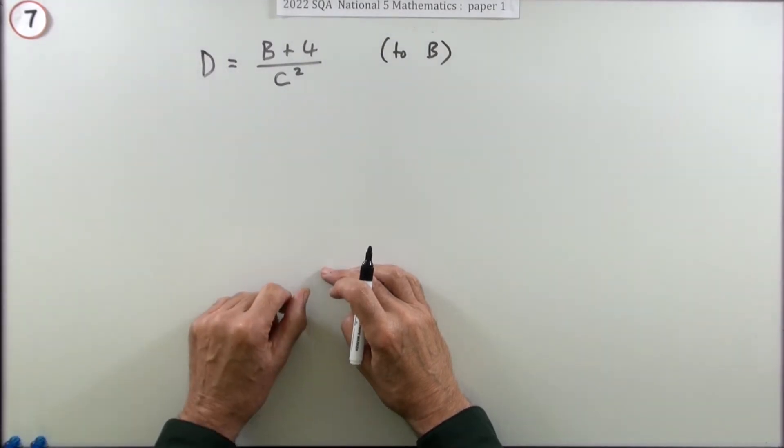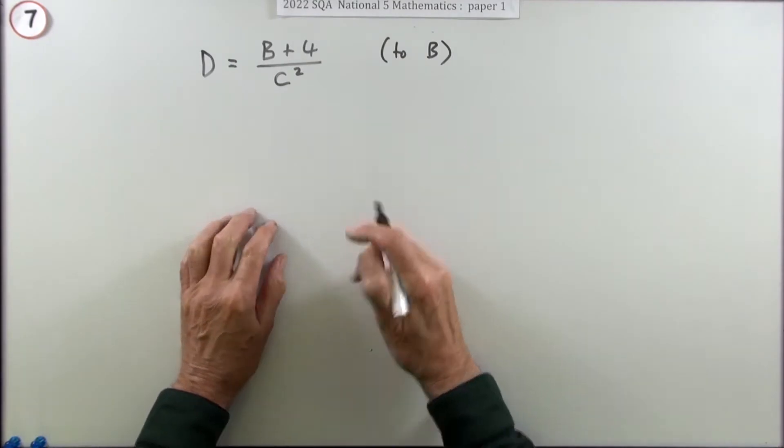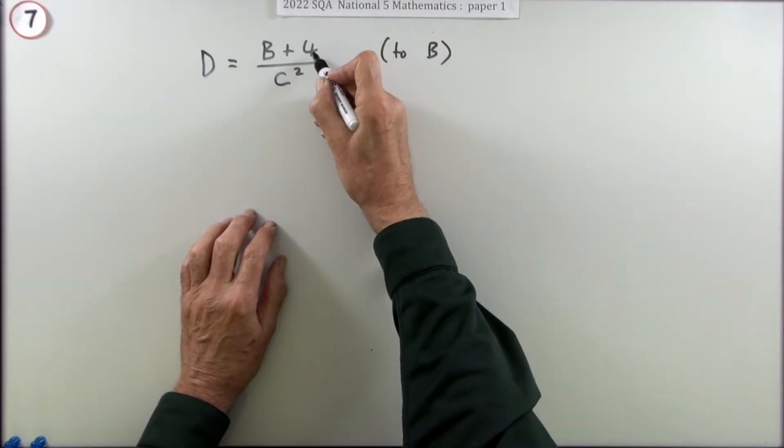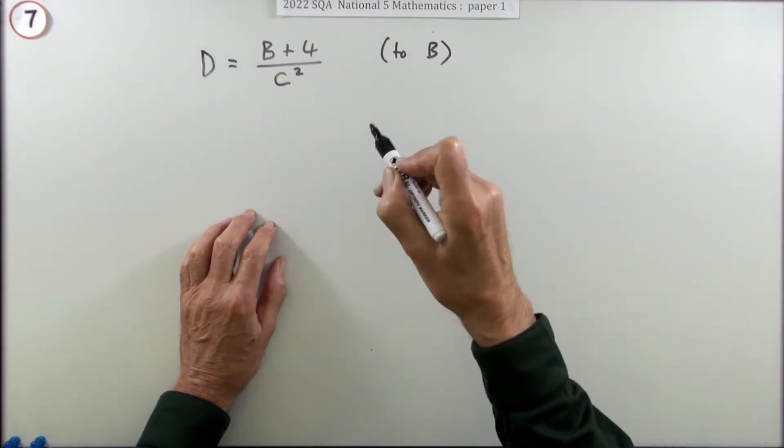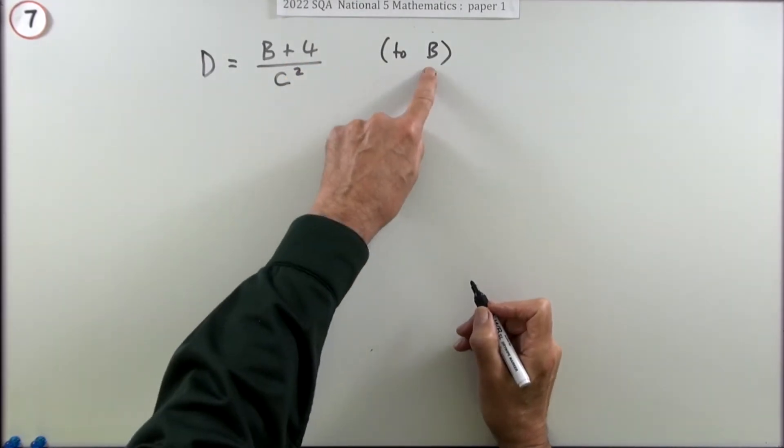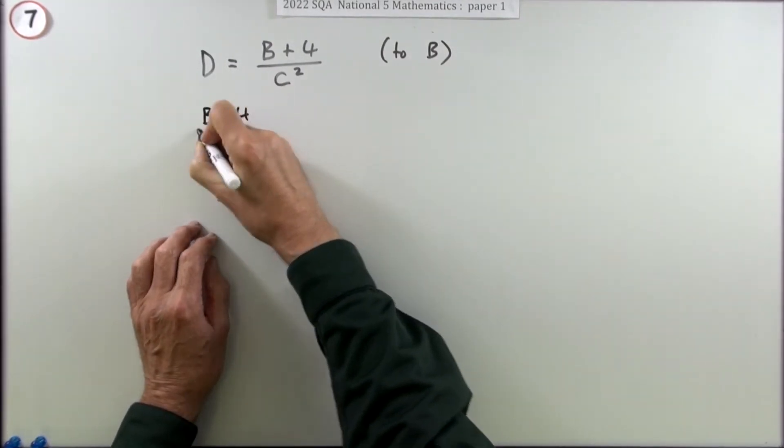But do it in the correct order. Don't take that four across first of all. It's the divides and multiplies that come before the adds and subtracts. If you have to get B to be one thing, you could just write it the other way around: B plus four over C squared equals D.